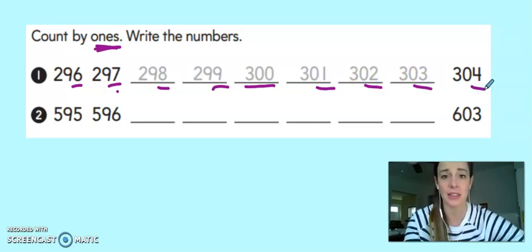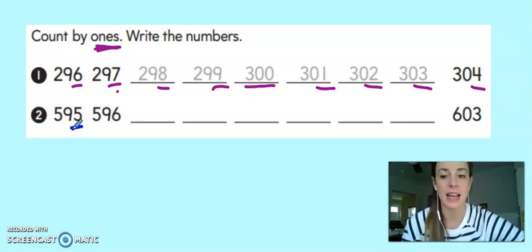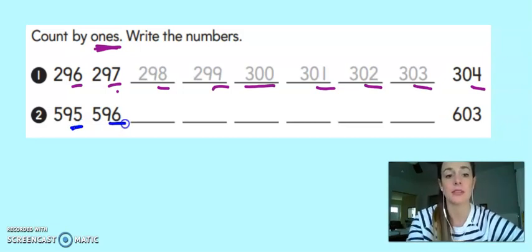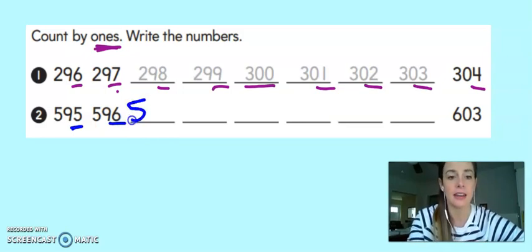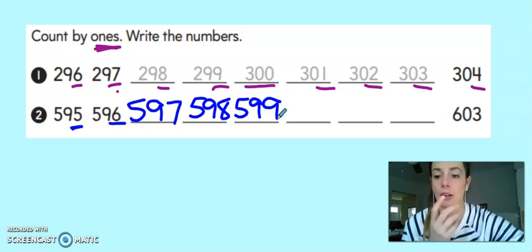Let's try the next one together as a practice. When I look at the ones place, I see that I start with 595. I know that after 95 comes 96. I'm still in 500. Then I go to 597, 598, 599.